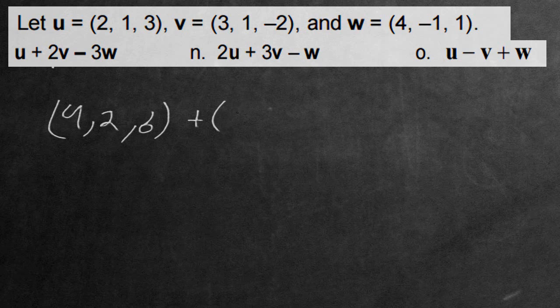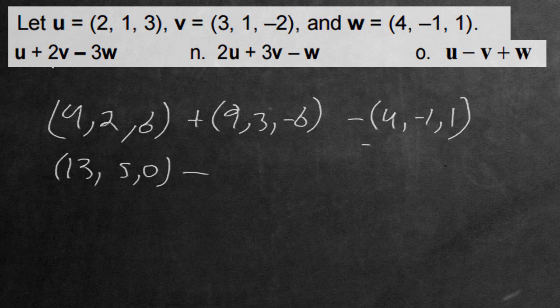Adding on to 3v, that's going to give us 9, 3, and a negative 6, and subtract w, so nothing's being done to this one. Let's add these together. That's going to give us 13, 5, and 0. Subtract this one. 13 subtract 4 gives us 9, we have 5 add 1, so it's 6. 0 subtract 1 is negative 1, and this is the answer for the next question.